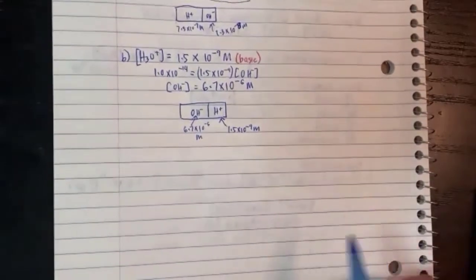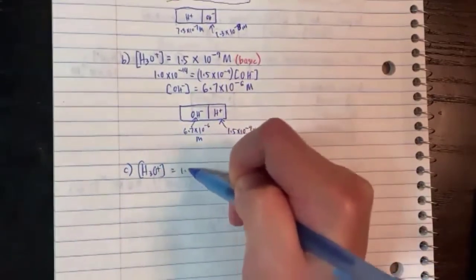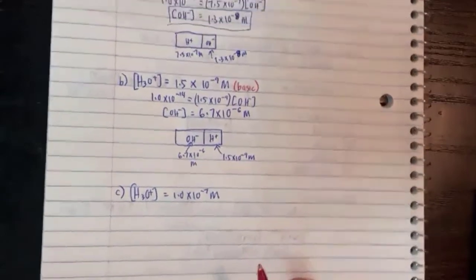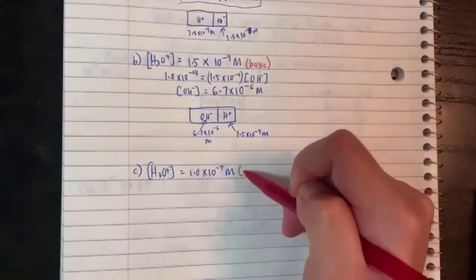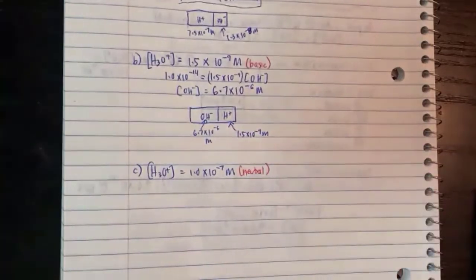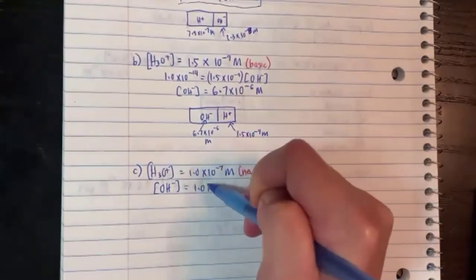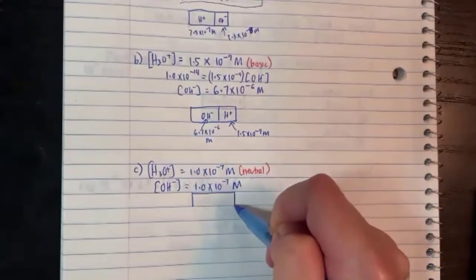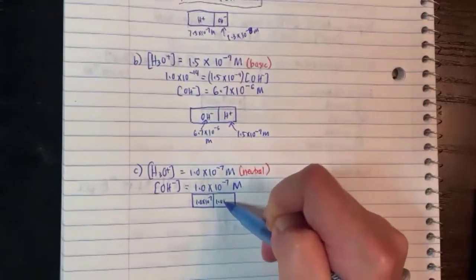Part C: H₃O⁺ equals 1.0×10⁻⁷. Acidic, basic, or neutral? This one is going to be easy — it is exactly the same as the middle ground number. Same number: this one will be neutral, basically pure water. If it's neutral, you don't really have to calculate. We already know it's just the same number — 1.0×10⁻⁷. Half and half, 50-50: H⁺ is 1.0×10⁻⁷ and OH⁻ is 1.0×10⁻⁷.